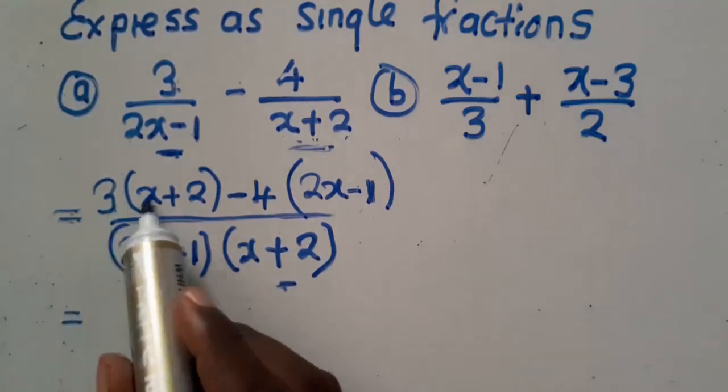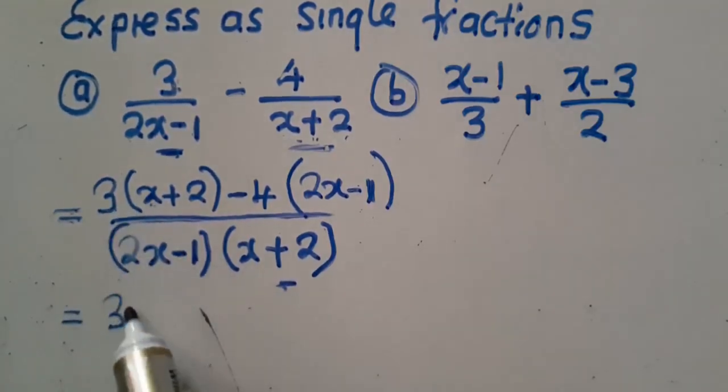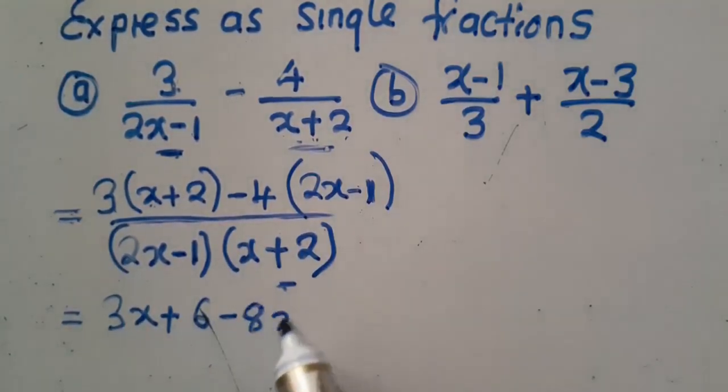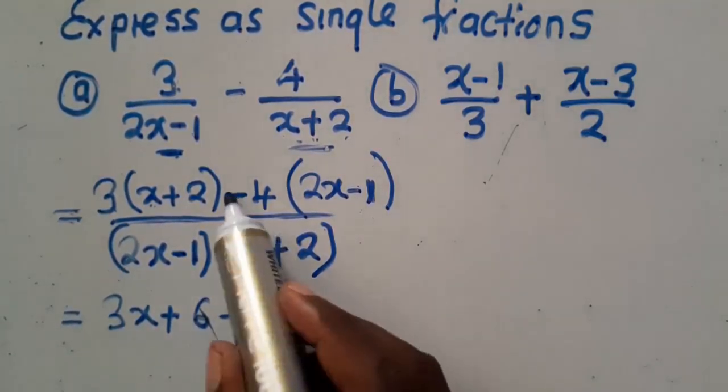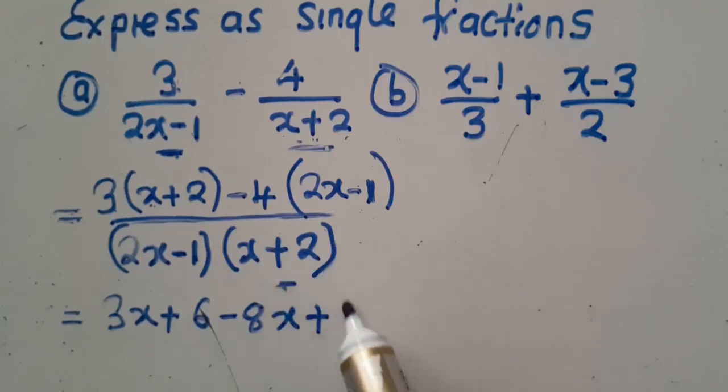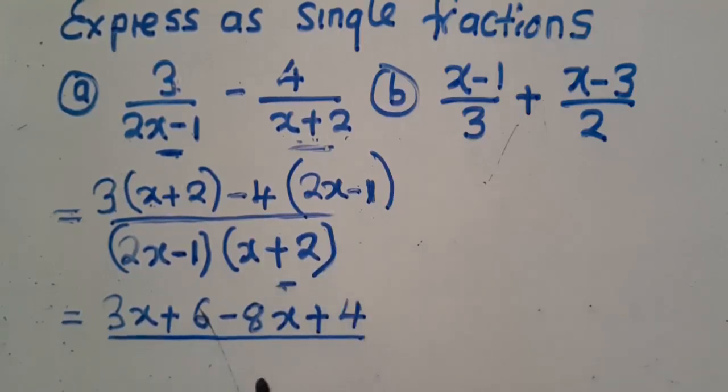3 times x, that is 3x, plus 3 times 2, 6, 4 times 2x, that is minus 8x, plus negative times negative, that is a positive, plus 4. Then you say over. This one will continue. So 2x minus 1. Then you say x plus 2.